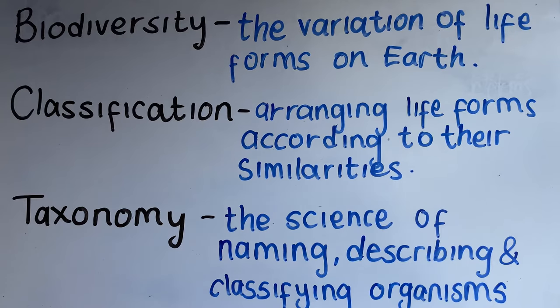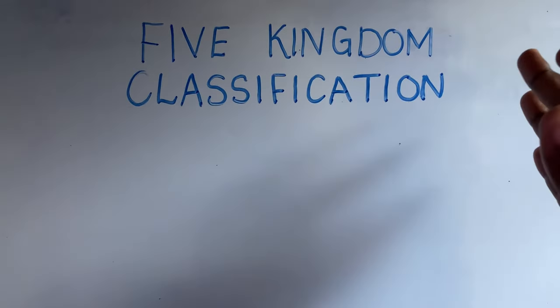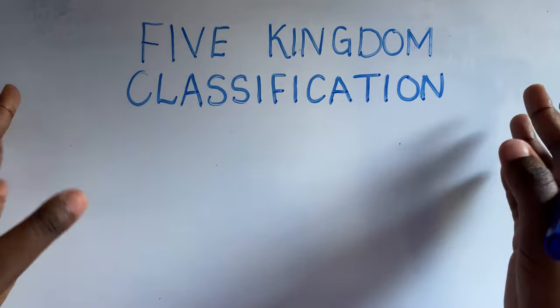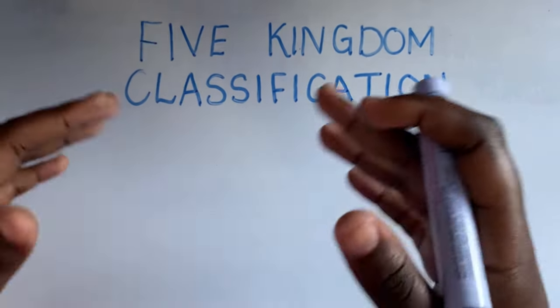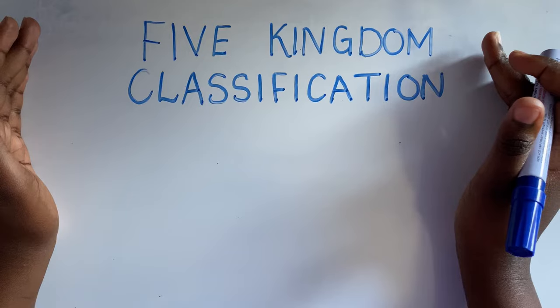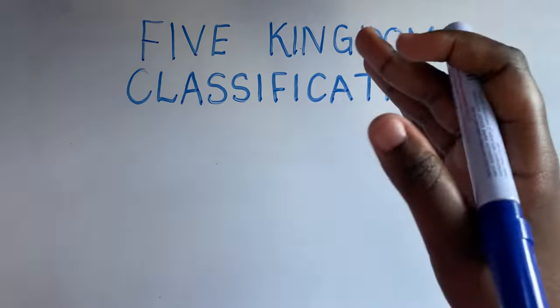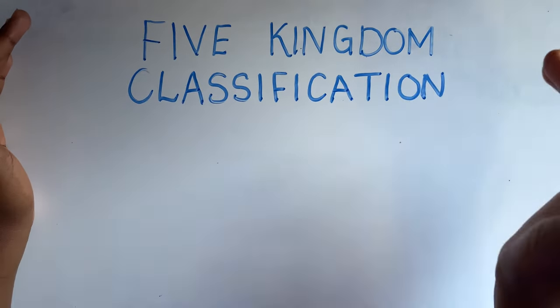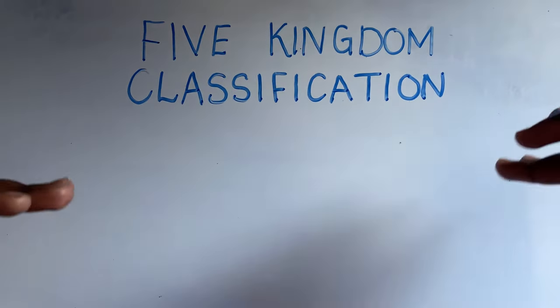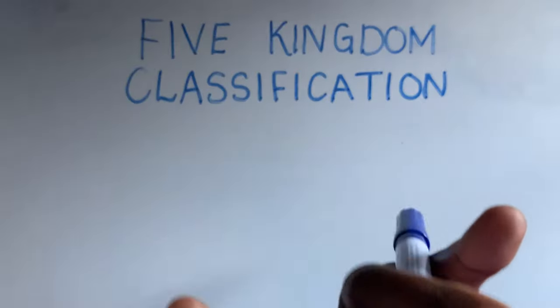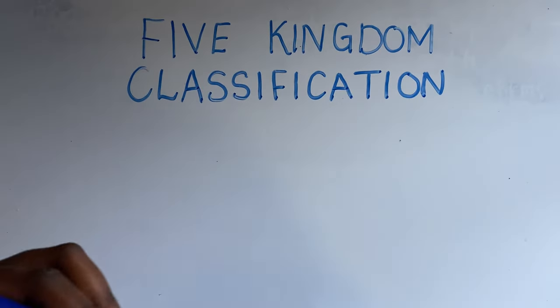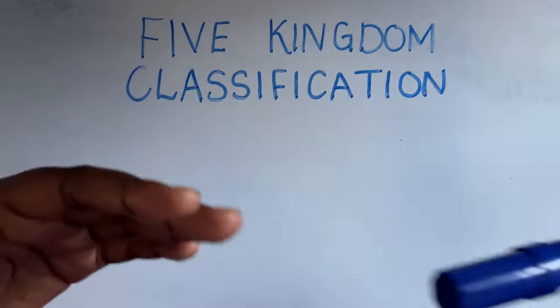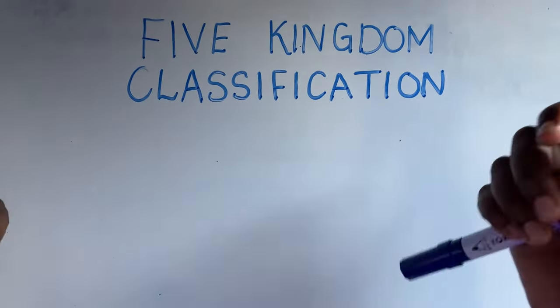Now let's get into the real thing. Classification can be tricky because problems arise when a species fits into more than one category. But fortunately, a modern system has been introduced: the five kingdom system of classification.